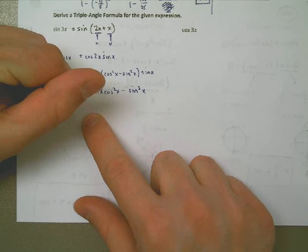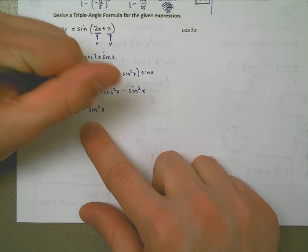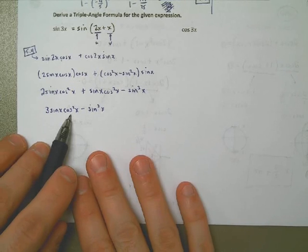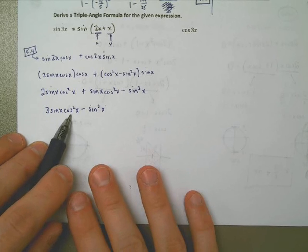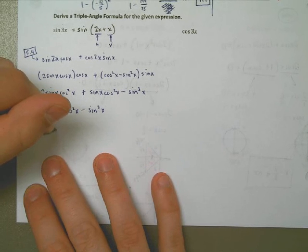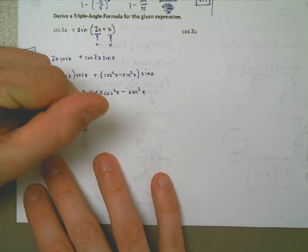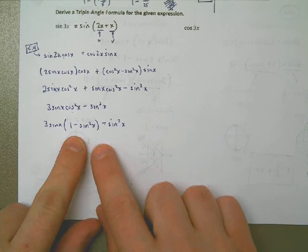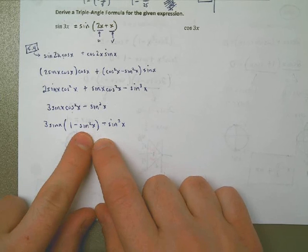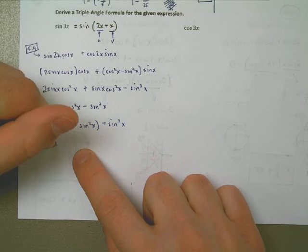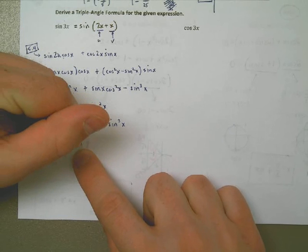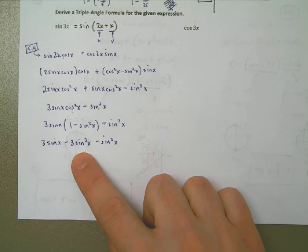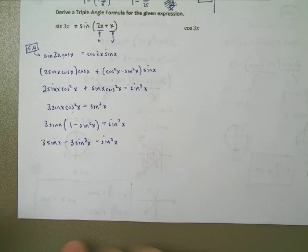Since everything is in sine except for this cosine squared term, I'm going to replace cosine squared with 1 minus sine squared using the Pythagorean identity. Let's see if putting everything in terms of sines lets things combine. After distributing the 3 sine x, that gives 3 sine of x minus 3 sine of x times sine squared of x, minus another sine cubed of x. So 3 plus 1 is 4 total, and my final expression is 3 sine of x minus 4 sine cubed of x.